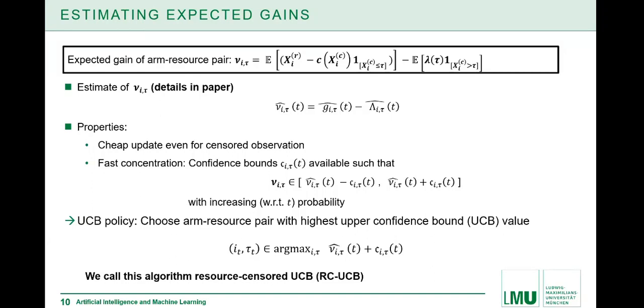Once we have this confidence bound, we can resort to a learning strategy quite often used in the bandit literature, namely the UCB policy, which is essentially telling, choose the action which has the highest upper confidence bound, so the UCB value. In our case, the action consists of two parts, an arm and a resource limit. We have for all arms and resource limits such an upper confidence bound, and we choose the one with the highest one. Due to the setting we consider, we call this strategy the resource censored UCB, RC-UCB for short.